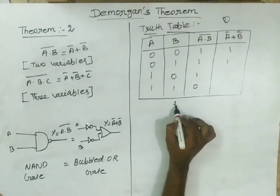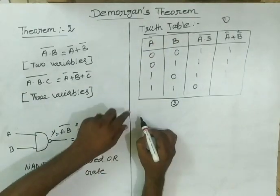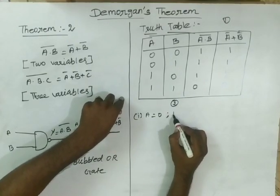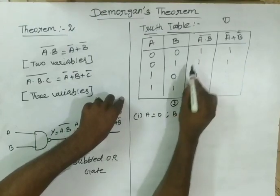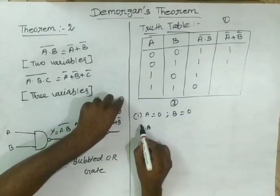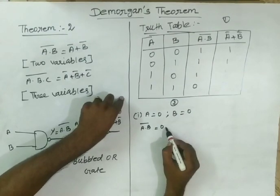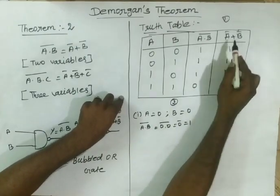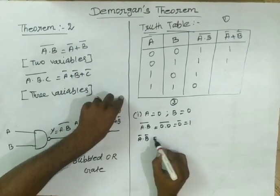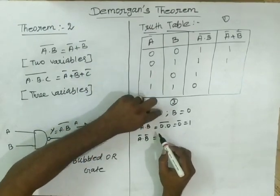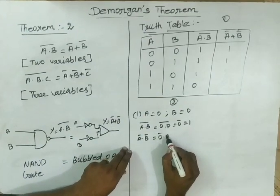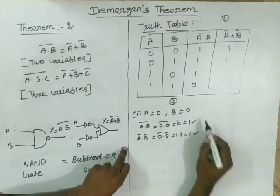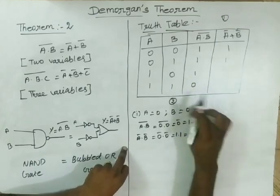Method 2 verification. First case: A=0, B=0. Left hand side: A dot B whole bar = 0 dot 0 whole bar = 0 bar = 1. Right hand side: A bar plus B bar = 0 bar plus 0 bar = 1 plus 1 = 1. Left hand side 1, right hand side 1 — first case verified.